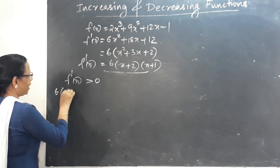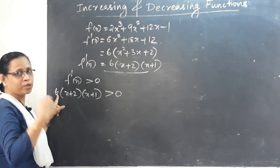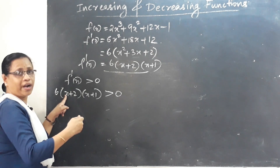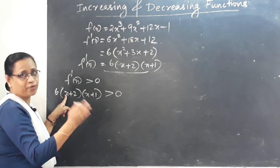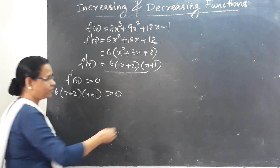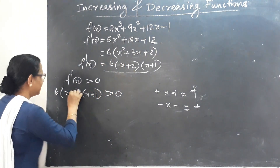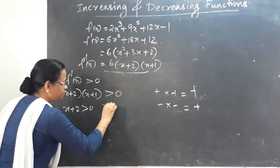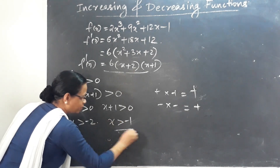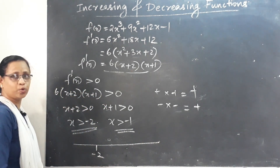For increasing, f'(x) > 0, meaning 6(x+2)(x+1) > 0. The two factors give critical points. For both factors positive: x + 2 > 0 and x + 1 > 0, so x > -2 and x > -1. For both factors negative: x < -2 and x < -1. Marking -2 and -1 on the number line.